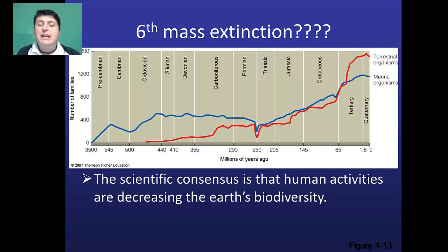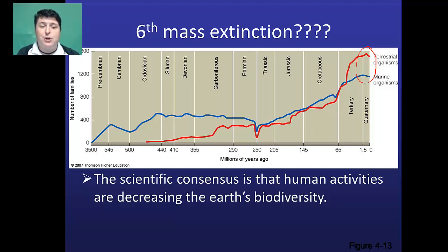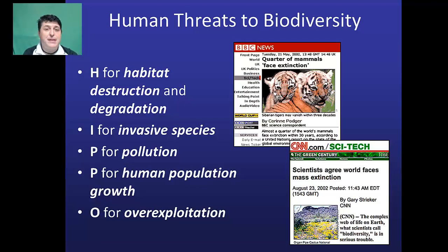Many scientists believe we're currently experiencing a sixth major extinction, where human activities that are changing environments and affecting the climate are decreasing Earth's overall biodiversity. There's an acronym that helps identify the major ways humans are impacting biodiversity so we can recognize those impacts and try to counteract them: HIPPO — H-I-P-P-O.